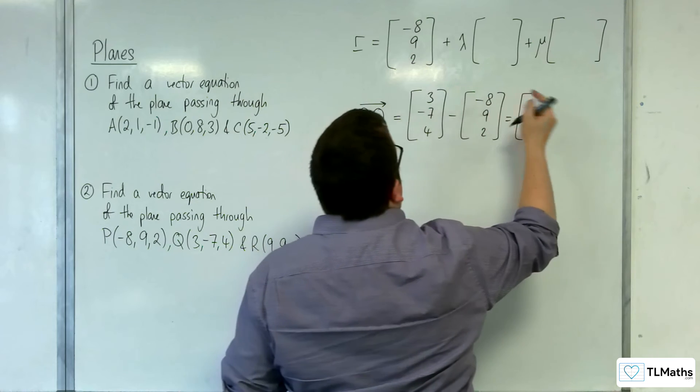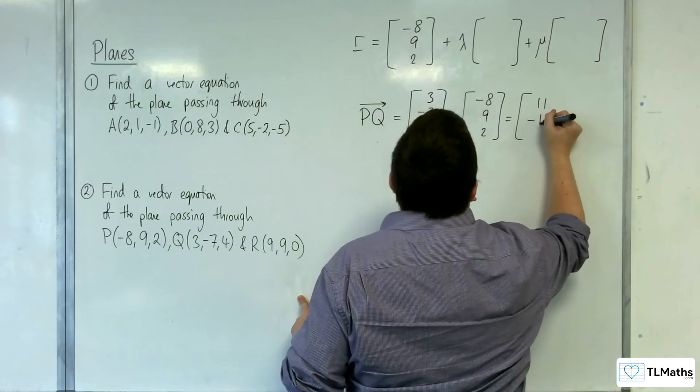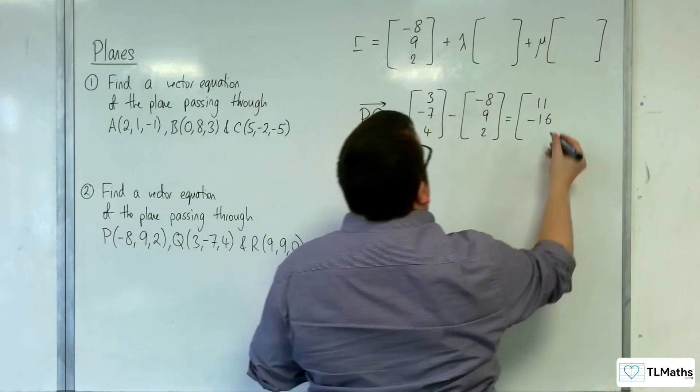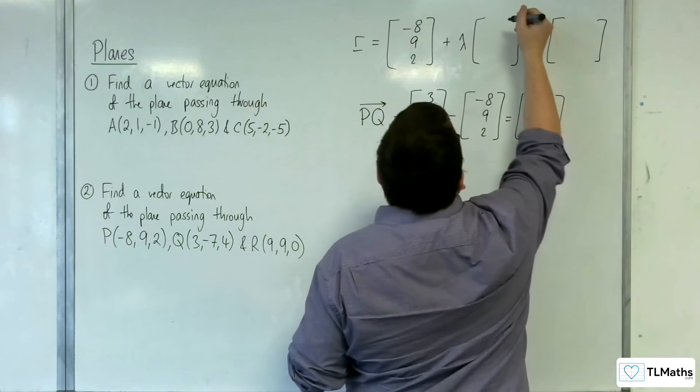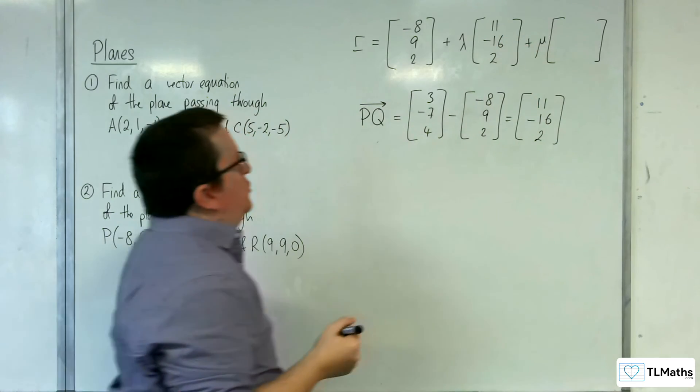So 3 take away minus 8 is 11. Minus 7 take away 9 is minus 16. And 4 take away 2 is 2. So 11, minus 16, 2 is our first direction vector.